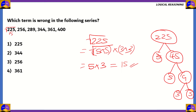Since we don't have space to solve for the others, we'll just write the solutions. So for 225 we have 15. For 256, the square root is 16. For 289, it's 17. For 361, it's 19. And for 400, we have 20.